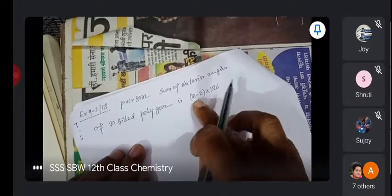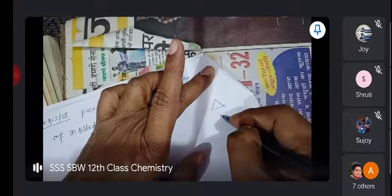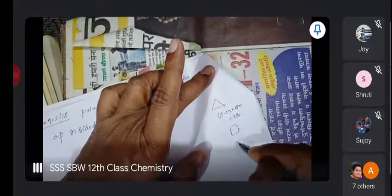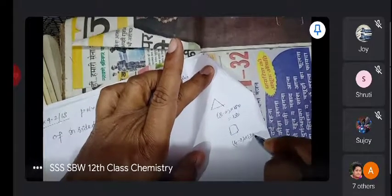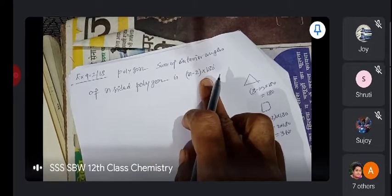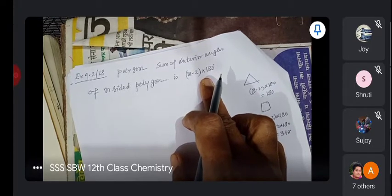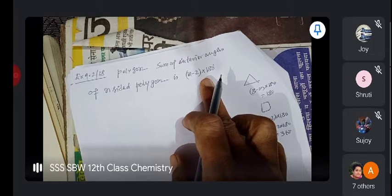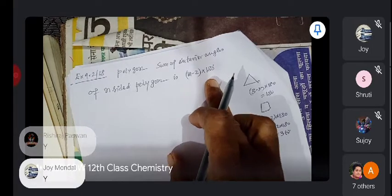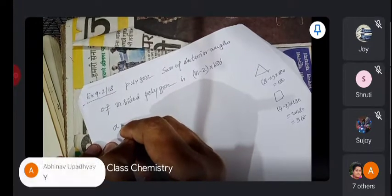For a triangle, it's 3 minus 2 into 180, that's 180 degrees. For a quadrilateral, four sides, 4 minus 2 into 180, that's 2 into 180, which is 360 degrees. So the formula is n minus 2 into 180. Is it clear? The sum of n-sided polygon.